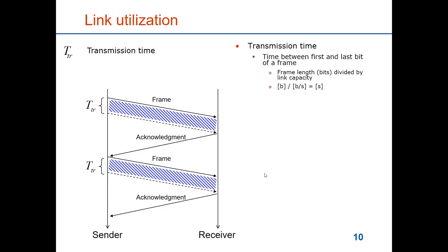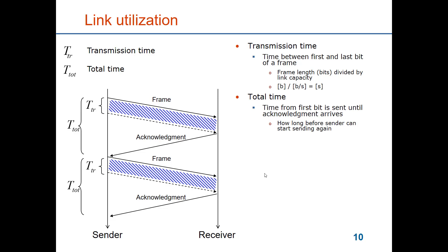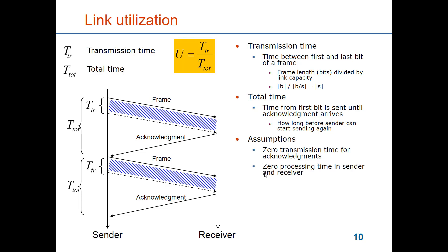The total time is the time from when the first bit has been sent out until the acknowledgement has been received and the sender is permitted to send a new frame. If we assume that the receiver is ready for a new frame and will send an acknowledgement as soon as the frame has been received, the useful time of the link is then the transmission time divided by the total time. As illustrated here, the transmission time is just a small part of the total time.